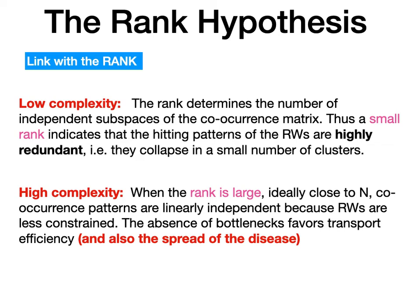High complexity occurs when the rank is large, ideally close to n, meaning co-occurrence patterns are linearly independent because the random walks are less constrained. The efficiency of information transmission in the graph, or information diffusion, is larger when the rank is large, meaning the absence of bottlenecks. Relaxing mobility measures favors transport efficiency and also the spread of the disease.